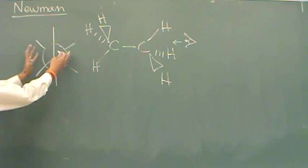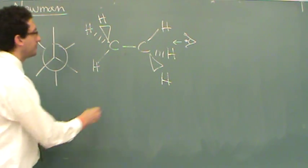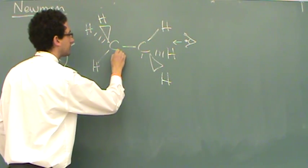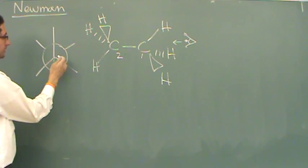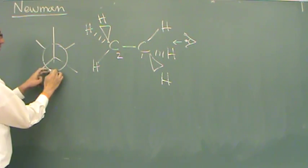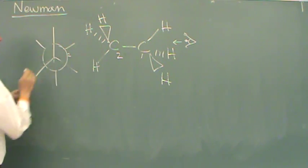This brings up what we call now the Newman projection. If this is carbon 1 and this is carbon 2, that would make this carbon 1, this one here, the thing that looks like in front, and then this circle here represents carbon 2.